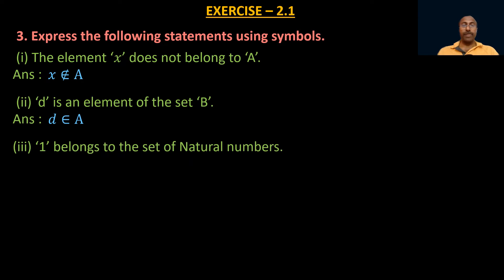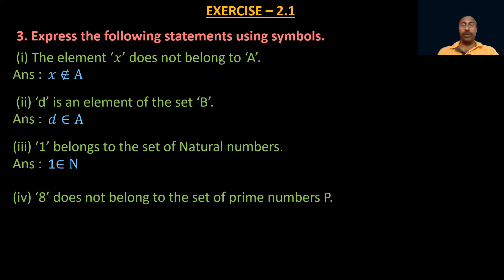Third: 'one belongs to the set of natural numbers.' We usually denote the set of natural numbers by N, and 1 is present in N, so we write 1 ∈ N. Fourth: 'eight does not belong to the set of prime numbers P.' Since 8 is not present in P, we write 8 ∉ P. In this way, we can write sentences in mathematical symbolic form.